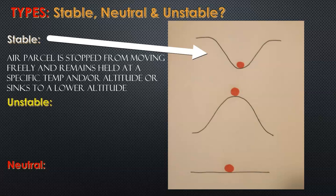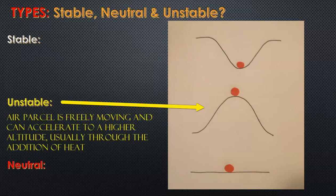In a stable atmosphere, the air parcel either sinks or remains at the same altitude. In an unstable atmosphere, the air parcel is pushed out of its altitude and accelerates to a higher altitude — due to, for example, the addition of thermal energy, since hot air rises. The air parcel becomes unstable when forced upward by heat or by a cold air mass, and it cools down as it increases in altitude.